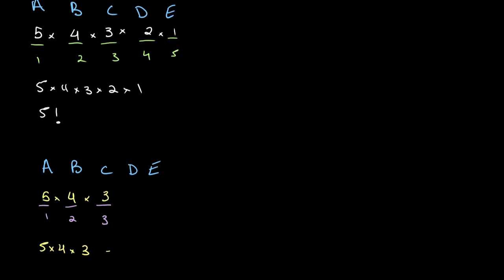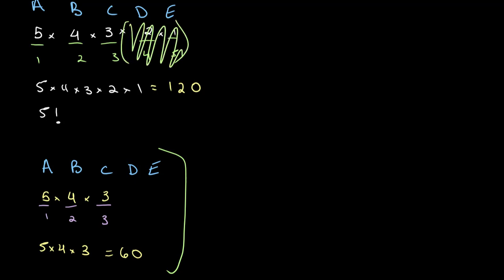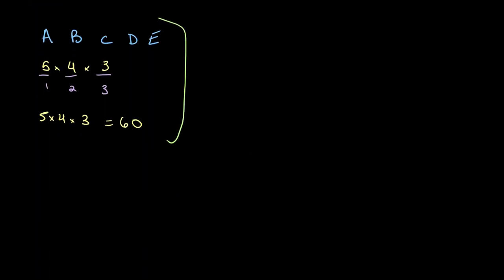So the number of different arrangements we can have is 5 times 4 times 3, which gives us 60. And for the previous example with 5 seats, we had 120. You've probably already noticed that the second problem is essentially the same thing as the first problem, but we just cut off the last part of the equation. We could look at another example where, for the same 5 people, we have only 2 seats, giving us 5 times 4, which equals 20 possible combinations.